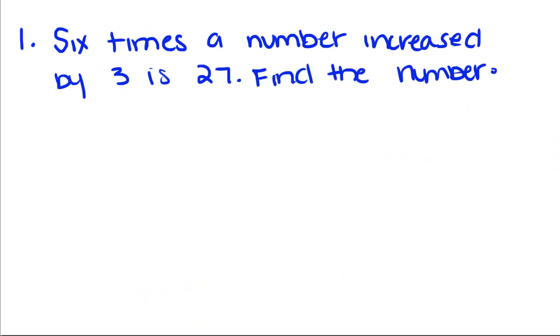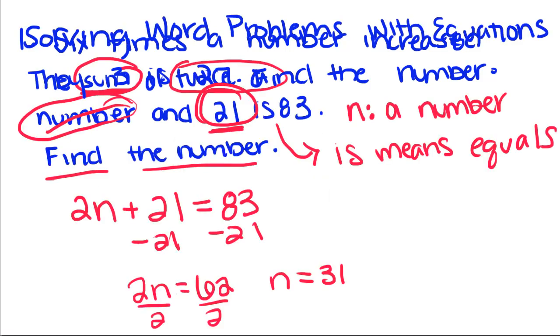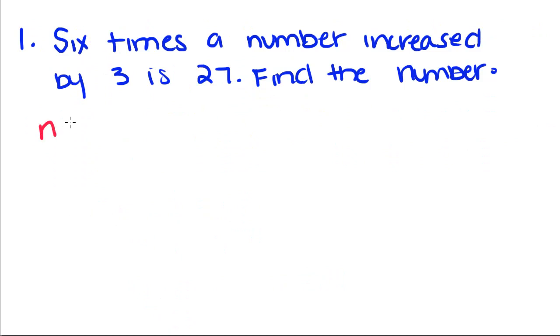6 times the number increased by 3 is 27. Find the number. So 6 times a number - n is going to be our number again.